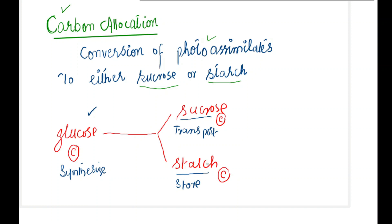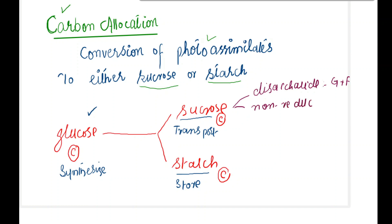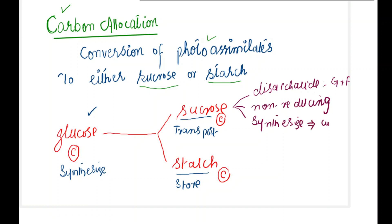Sucrose, which is given as a form of carbon — if we look at details, we should know that sucrose is basically a disaccharide sugar. Disaccharide means it is made of two monosaccharides: glucose plus fructose. This is basically a non-reducing sugar, and it is found in the cytosol part of the cell.